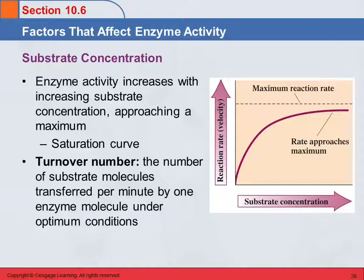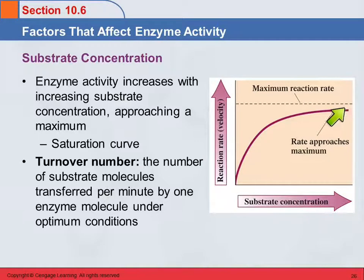Substrate concentration will also affect enzyme activity. If we hold the enzyme concentration the same and increase the substrate concentration, the reaction rate will go up — but not indefinitely. It will level out and eventually reach a maximum rate. This is called a saturation curve, because there comes a point where the enzyme is catalyzing reactions as fast as it possibly can. Think of kindergartners going over a fence: the teacher can only lift them over so fast, and at that point the reaction rate does not increase anymore. We have a name for that maximum rate: it's called the turnover number — the number of substrate molecules transferred per minute by one enzyme molecule under optimum conditions.